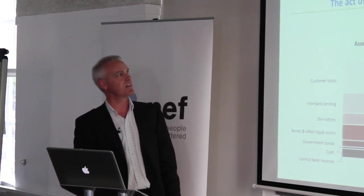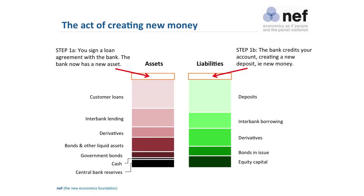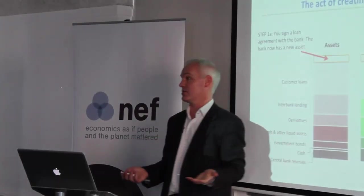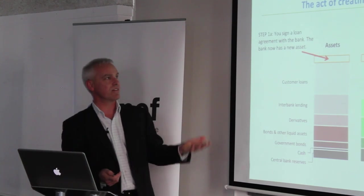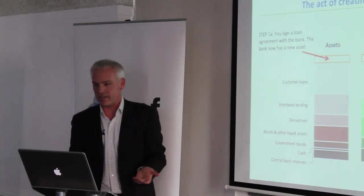So, the act of creating new money. Step one: the bank signs a loan agreement with somebody. The bank now has an asset — it's going to have a flow of interest from this loan agreement and it's going to get repaid. The wonder of double entry bookkeeping requires an equal and opposite entry: the bank credits the borrower's account with that sum of money — it just types the numbers in. That's its liability. Everything matches, and what you've done is created a brand new deposit. Of course, you wouldn't borrow money simply to leave it in the account.